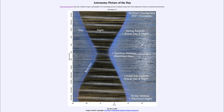Towards the middle of the image we see the summer solstice, which is the maximum amount of daylight — note how very short the nighttime is there. Then we see the autumnal equinox, when the length of day and night are equal again, and finally at the bottom in December we see the winter solstice, where we get the maximum amount of darkness.